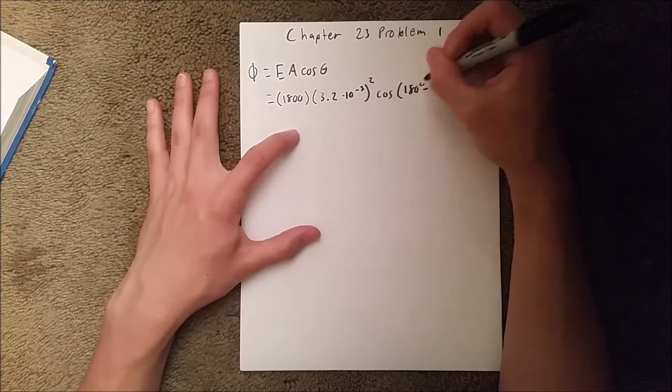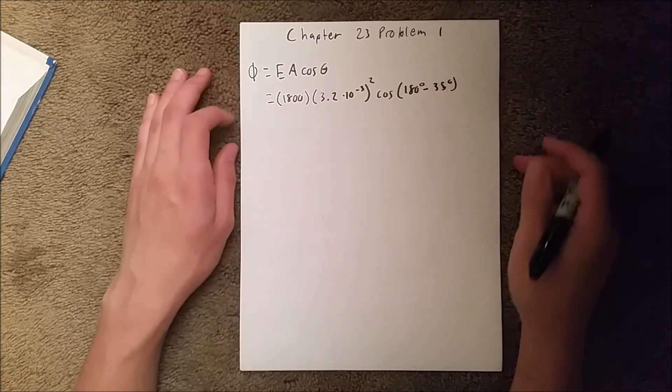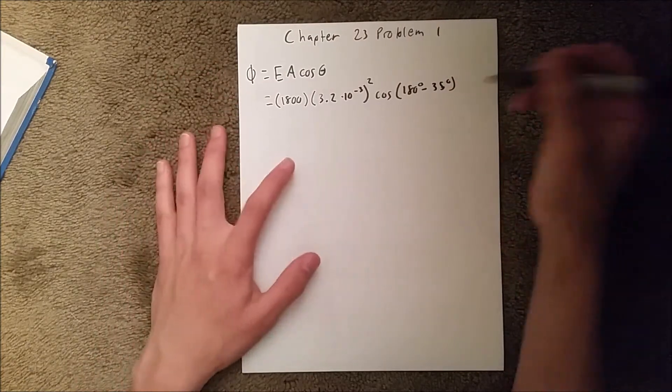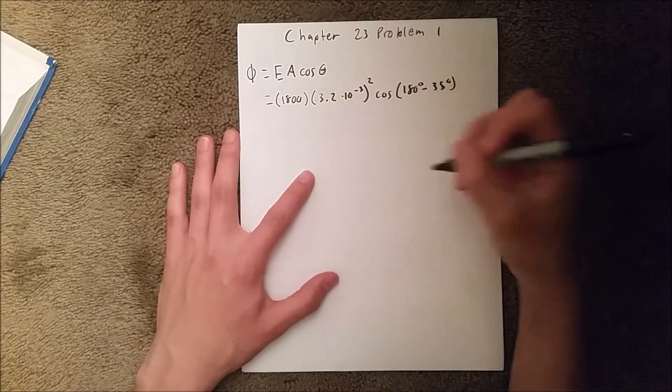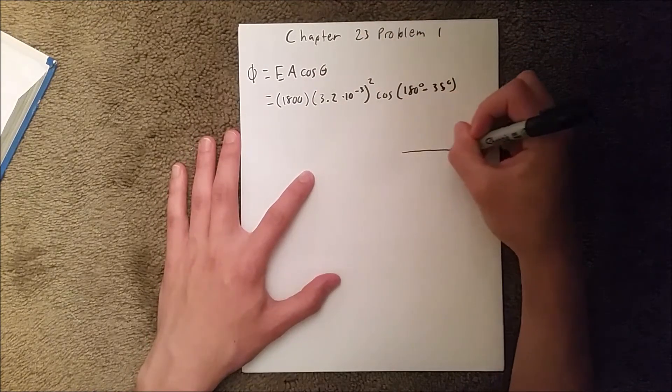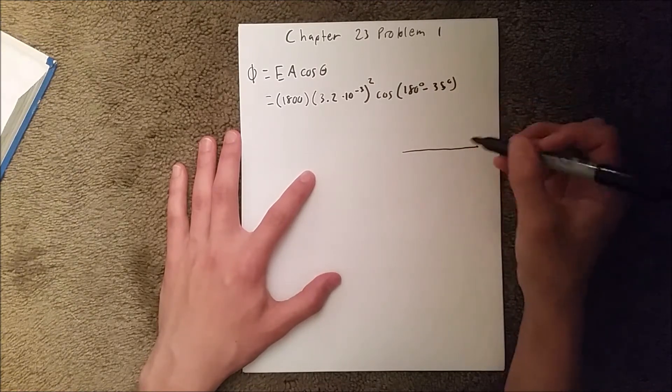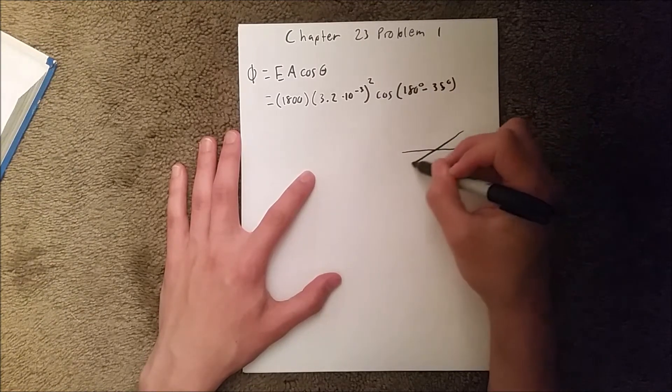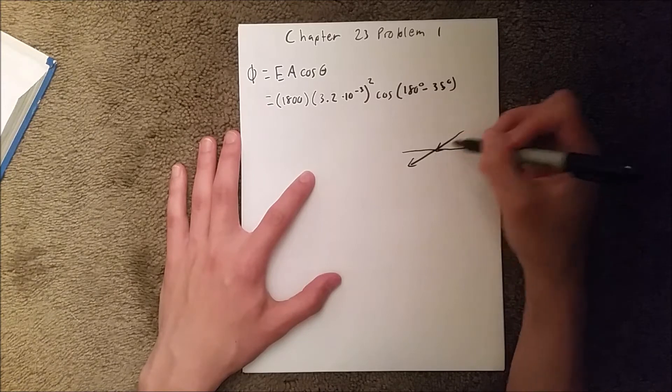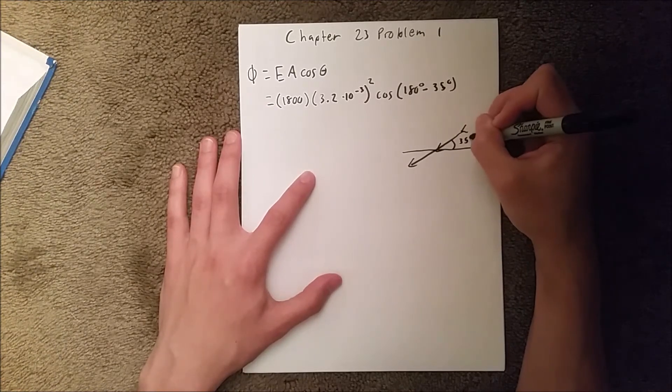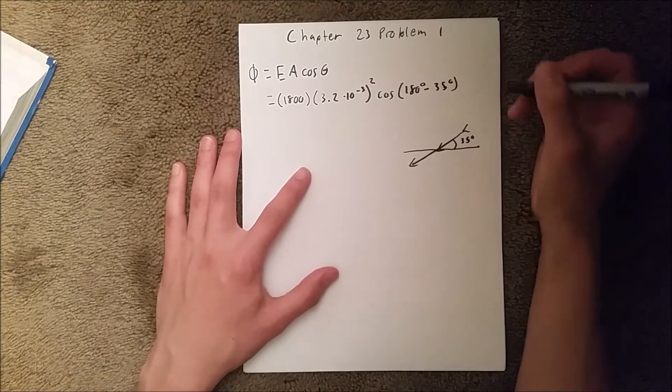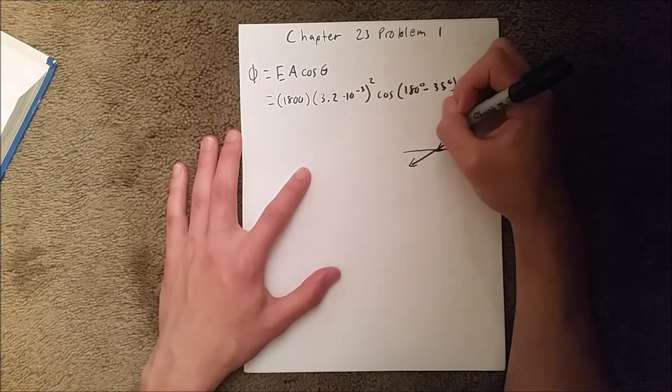Because you need the E field parallel to the surface. So pretend this is our surface right here - that's a side view - and our E field goes through this way. This angle right here is 35°. We need this angle here for flux, which will be 180 minus 35.